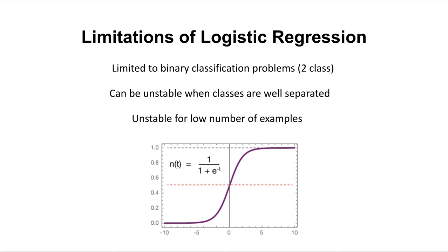Those are some limitations of logistic regression. Typically, logistic regression is a great classifier for binary classification — it uses the sigmoid function to generate a probability for a decision boundary. But we want something better for multi-class classification, which is classifying between multiple classes, not just two — for example, whether an image of an animal is a cat, dog, squirrel, rabbit, mouse, etc. Therefore, we need a technique like linear discriminant analysis, which takes logistic regression to the next level.